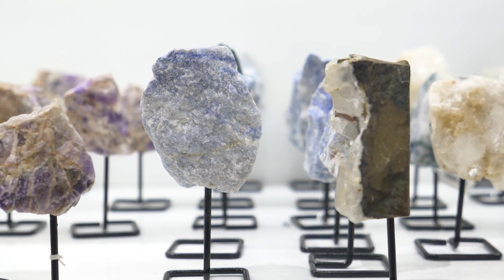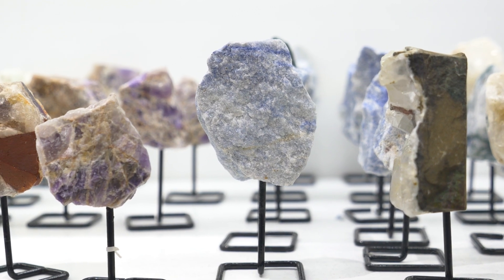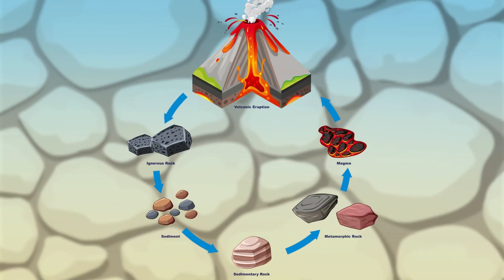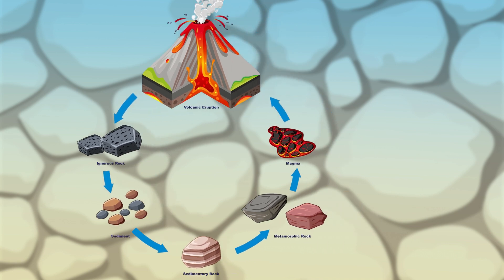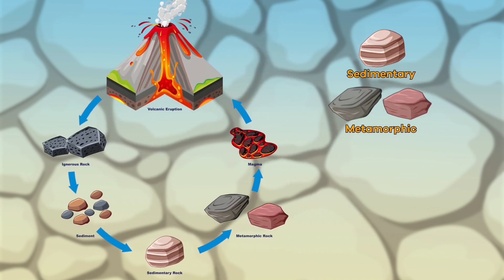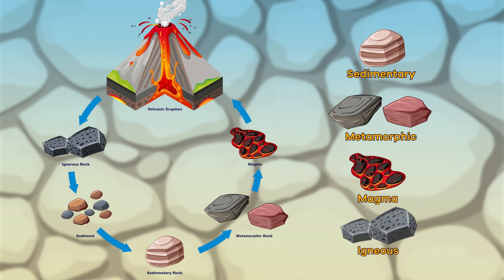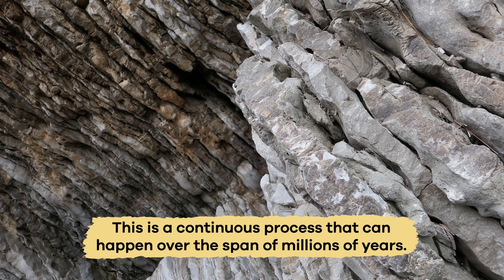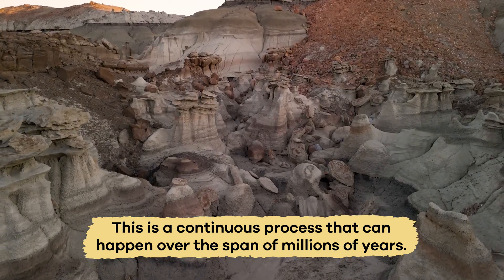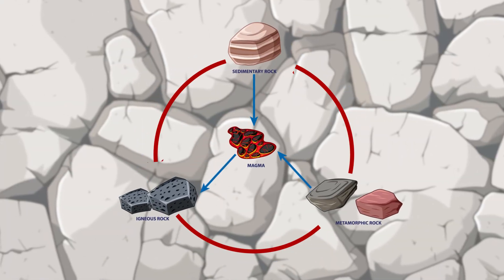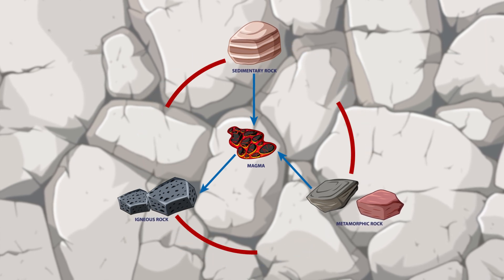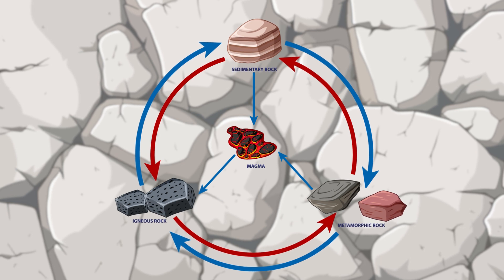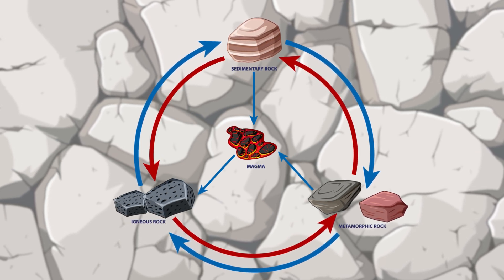Even though each rock type is different, they all go through a process called the rock cycle. Simply put, the rock cycle is the process by which one type of rock changes into another type of rock. This is a continuous process that can happen over the span of millions of years. Even though there are specific steps in the rock cycle, the order can and does change, depending on the rock.